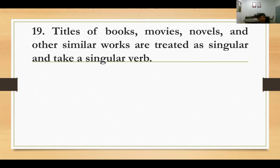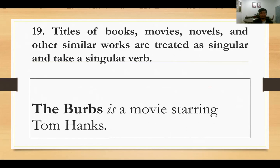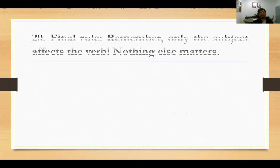Number nineteen: titles of books, movies, novels, and similar works are treated as singular and take a singular verb. Judul buku, film, novel, atau karya similar dianggap sebagai bentuk singular. Contoh: 'Ada Apa dengan Cinta is written by...' — karena judul dianggap singular, verbnya juga harus singular.